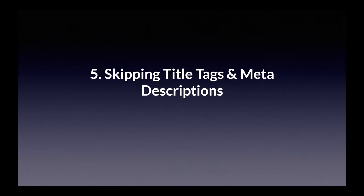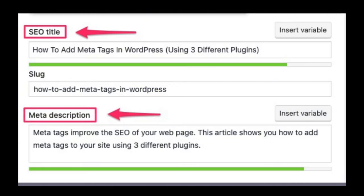SEO mistake number five: skipping title tags and meta descriptions. Title tags and meta descriptions tell search engines what your web page is about, but they also show up in your SERP snippet and act like an ad for your web page. This is where you persuade searchers that your page — and not the other pages — is the one they should click on. If you leave these fields empty, the search engines will fill them for you, and it won't be as good as the wording you would have chosen.